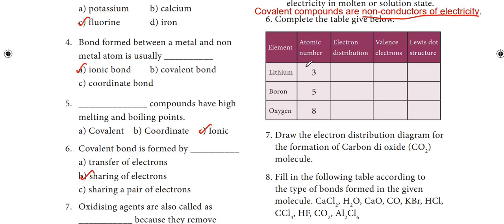Sixth question: complete the table. First, lithium, atomic number 3. Electron configuration: 1s2, 2s1. Valence electrons: 1. Lewis dot structure: Li with 1 dot.